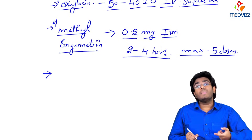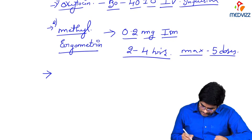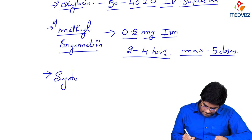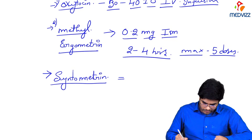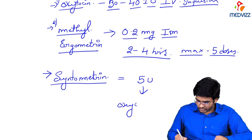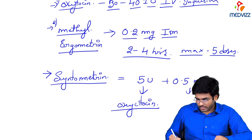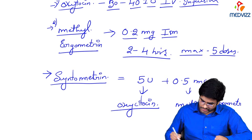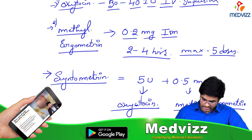Not only oxytocin or methyl ergometrin, you can also go for a combination. The combination of oxytocin and methyl ergometrin is known as syntometrin — 5 units of oxytocin and 0.5 mg of methyl ergometrin.